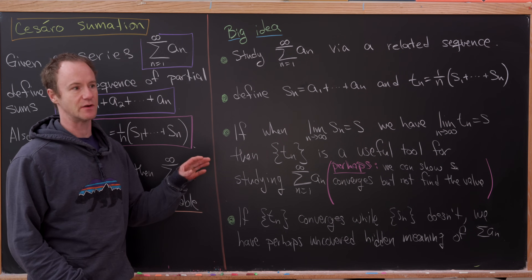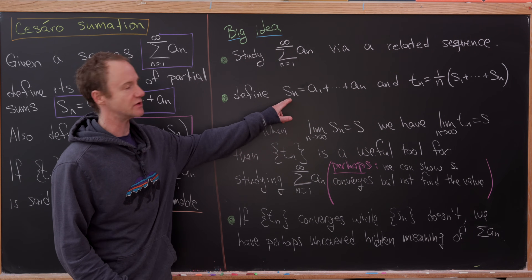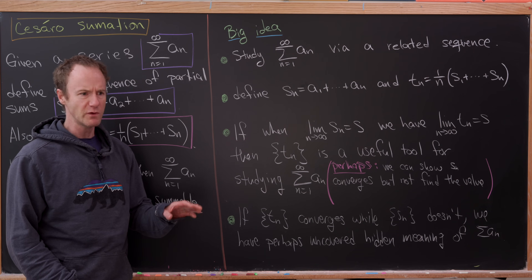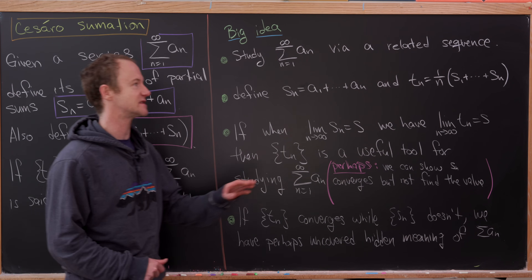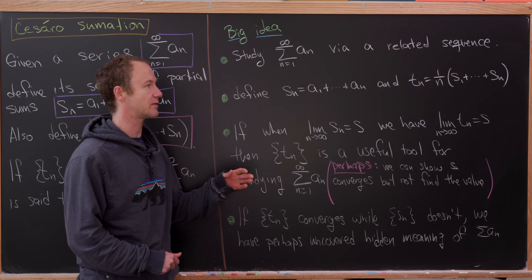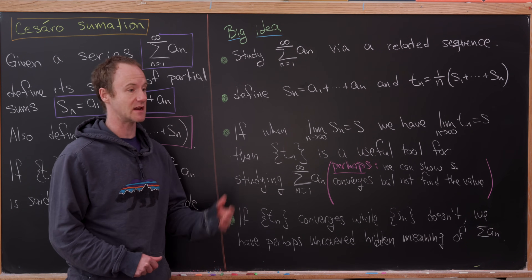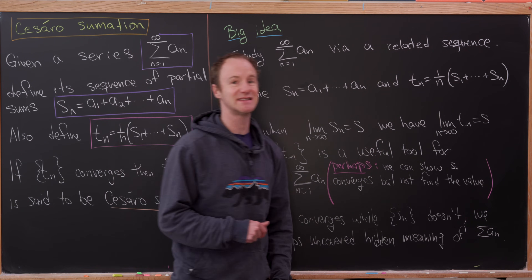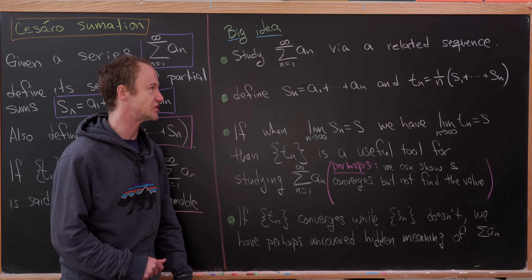The standard related sequence to study this series is the sequence of partial sums, S sub n, which is the sum of the first n terms. But we also want to study this via a non-standard related sequence, T sub n, which is 1 over n times S1 plus S2 up to Sn. In other words, it's the arithmetic mean of the first n partial sums.